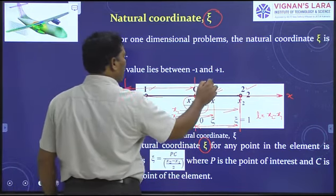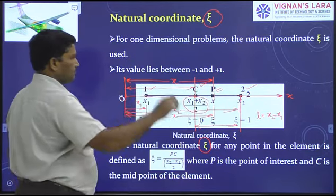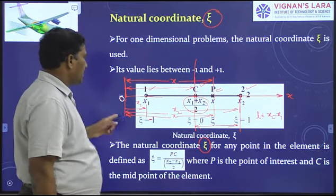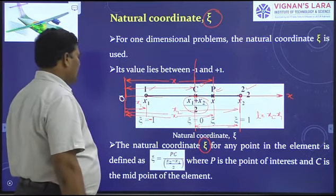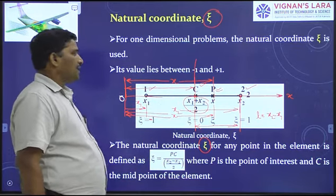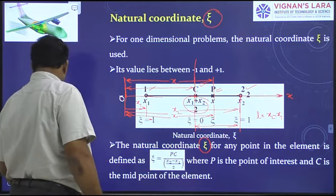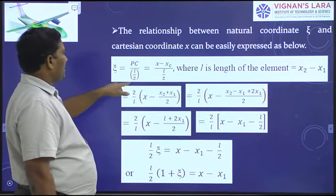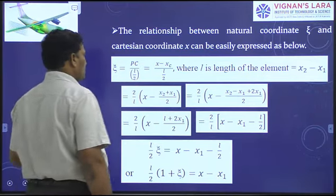Observe carefully. The distance of P from the coordinate origin is x. The distance of C from the coordinate origin is (x1 + x2)/2. Therefore PC equals x minus (x1 + x2)/2. In place of PC, we write x minus (x1 + x2)/2. Therefore ξ = PC / (l/2), where l = x2 − x1. We can also write PC as x minus xc.